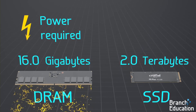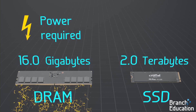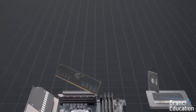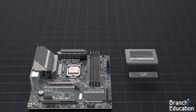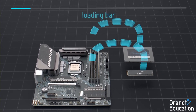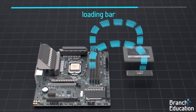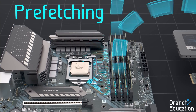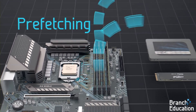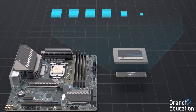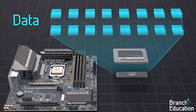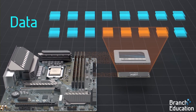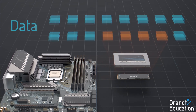Additionally, DRAM requires power to continuously store and refresh the data held in its capacitors. Therefore, computers use both SSDs and DRAM. By spending a few seconds of loading time to copy data from the SSD to the DRAM, and then pre-fetching — which is the process of moving data before it's needed — your computer can store terabytes of data on the SSD and access it in a few nanoseconds.